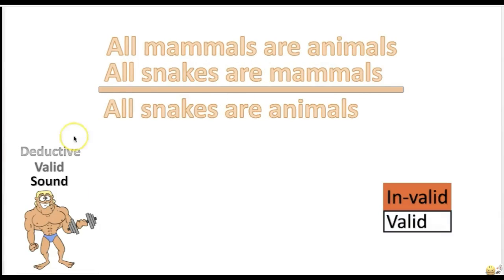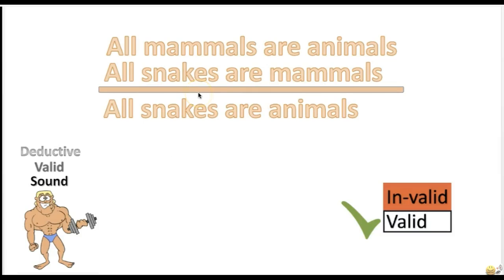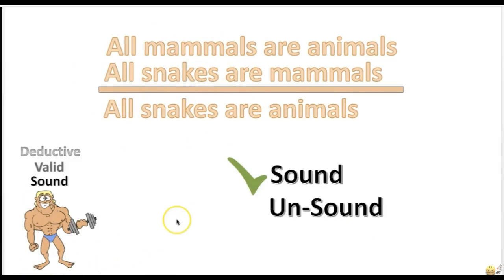Here's another practice problem: 'All mammals are animals. All snakes are mammals. Therefore, all snakes are animals.' Is this argument valid or invalid? It's valid. This one may be a little tricky — if you read the second premise first, you'll see that the conclusion does follow necessarily from the premises. Is this argument sound or unsound? It's sound — the argument is valid and both premises are true.